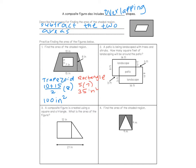Now I just want the shaded portion, which means I have to subtract the two areas. So 100 minus 35 gives us a final answer of 65 inches squared.